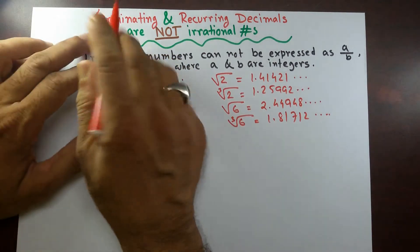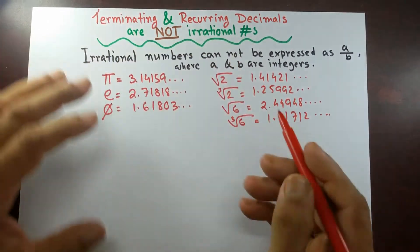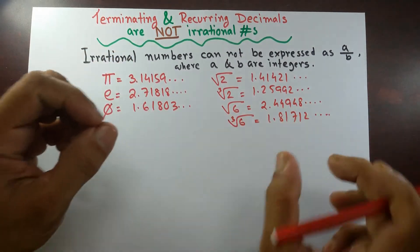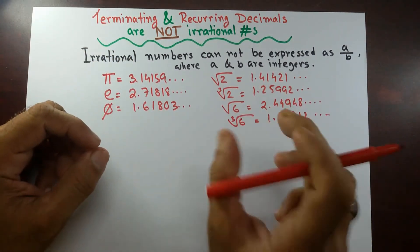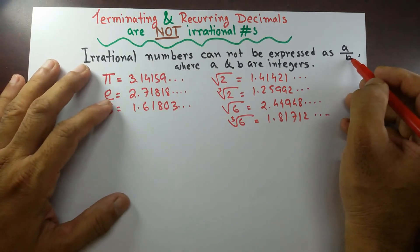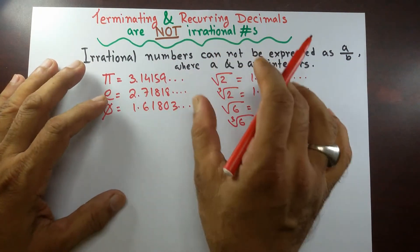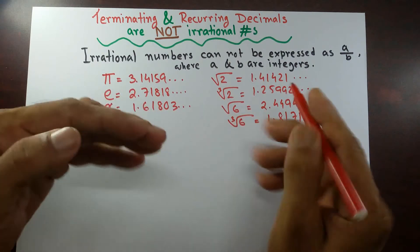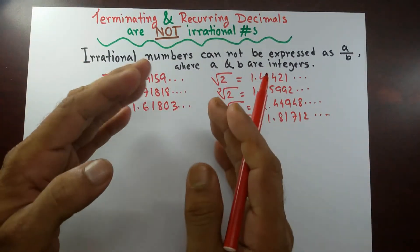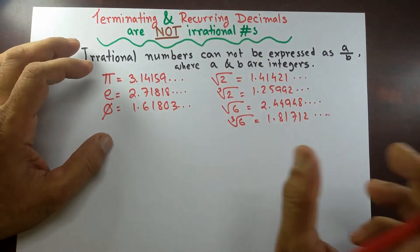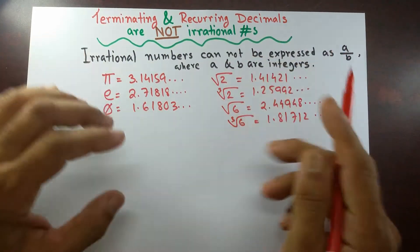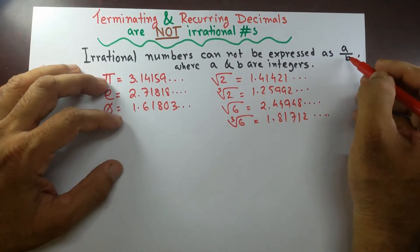But there are numbers called terminating decimals — that means at some point they have a finite number of decimal digits and can be expressed as a over b. And some numbers have infinite decimal places but with a set of repeating digits; these are called recurring or repeating decimals. They can also be written as a over b.